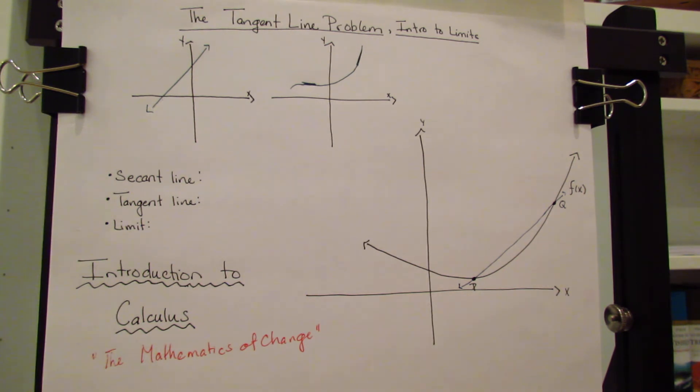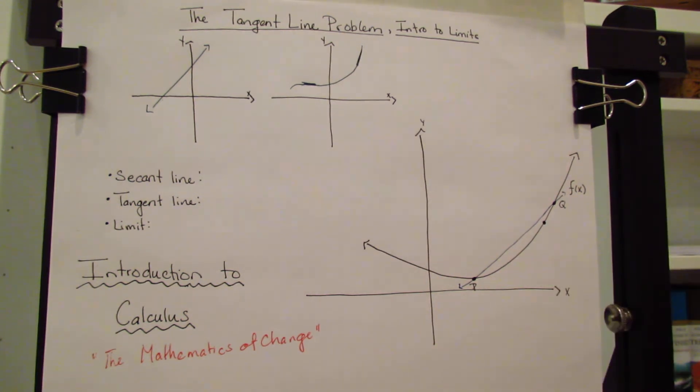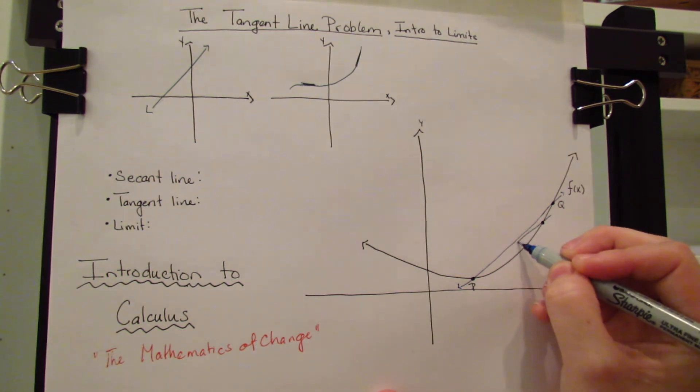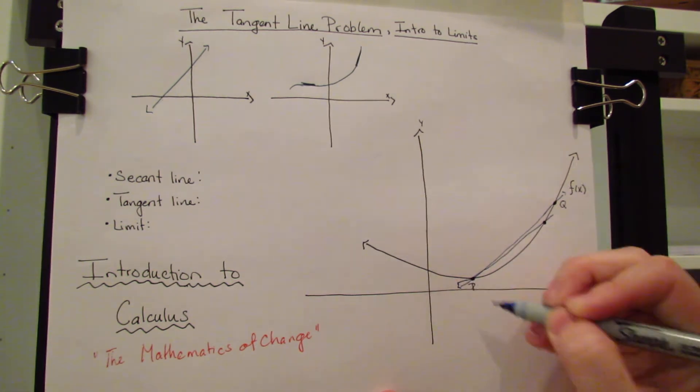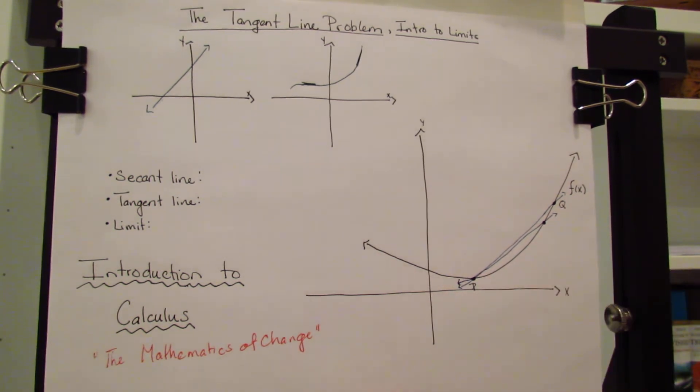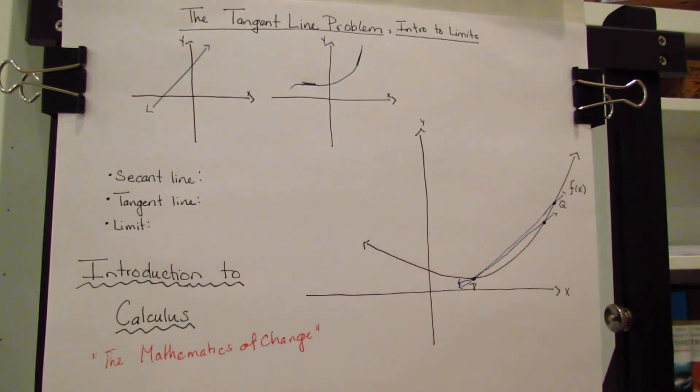But let's say we take Q and we move it a little closer. So we move it down to here. Let's draw a new line. For sake of argument, we'll pretend it's a straight line. So that line, the slope of that second line we drew is a little bit closer to the actual slope of P.